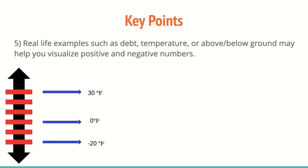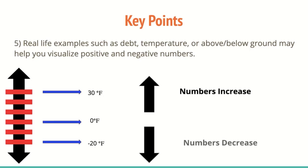So we can also use real life examples such as debt, temperature, or above below ground. These may help you visualize positive and negative numbers. So you see that the number line is actually flipped on the side, but this is something like you would see on a thermometer, or if you were going to do sea level or distance from the ground for height. As we go up, you can see that the numbers increase. And as you go down, the numbers decrease.